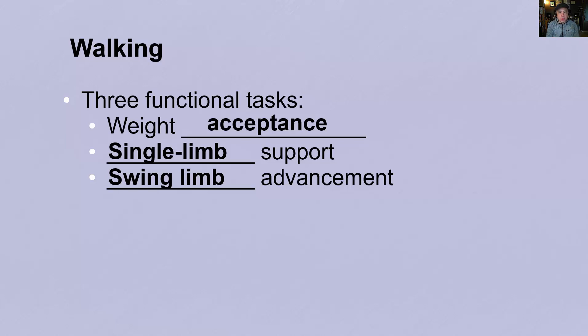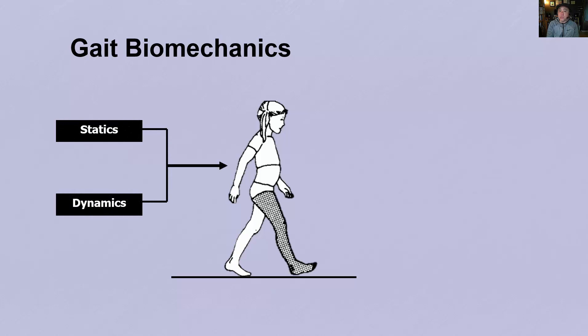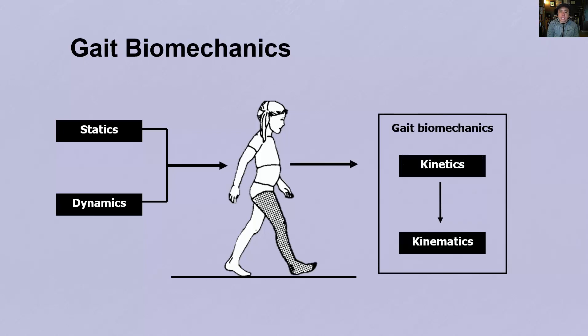Another functional task is what we call single limb support. There's a period of time in which your entire body weight is on one leg, and so that one leg's got to be able to support that entire body weight, while the other side is advancing forward. It's got to be able to move forward, and you do so by advancing the swinging limb.